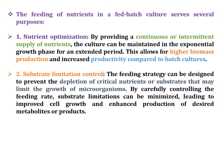The second purpose is substrate limitation control. The feeding strategy can be designed to prevent depletion of critical nutrients or substrates that may limit the growth of microorganisms. For example, in LB growth medium containing NaCl, peptone, and yeast extract, the critical nutrient is peptone. We add or feed critical nutrients at intermittent times, and by carefully controlling the feeding rate, substrate limitation can be minimized, leading to improved cell growth and enhanced production of desired metabolites.